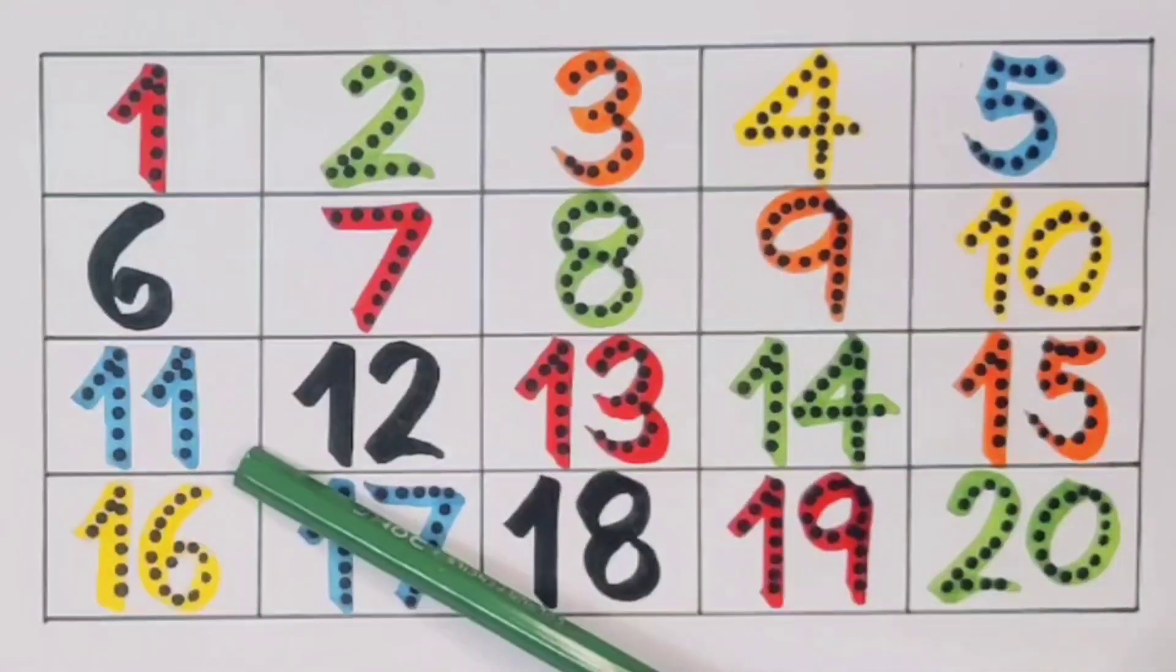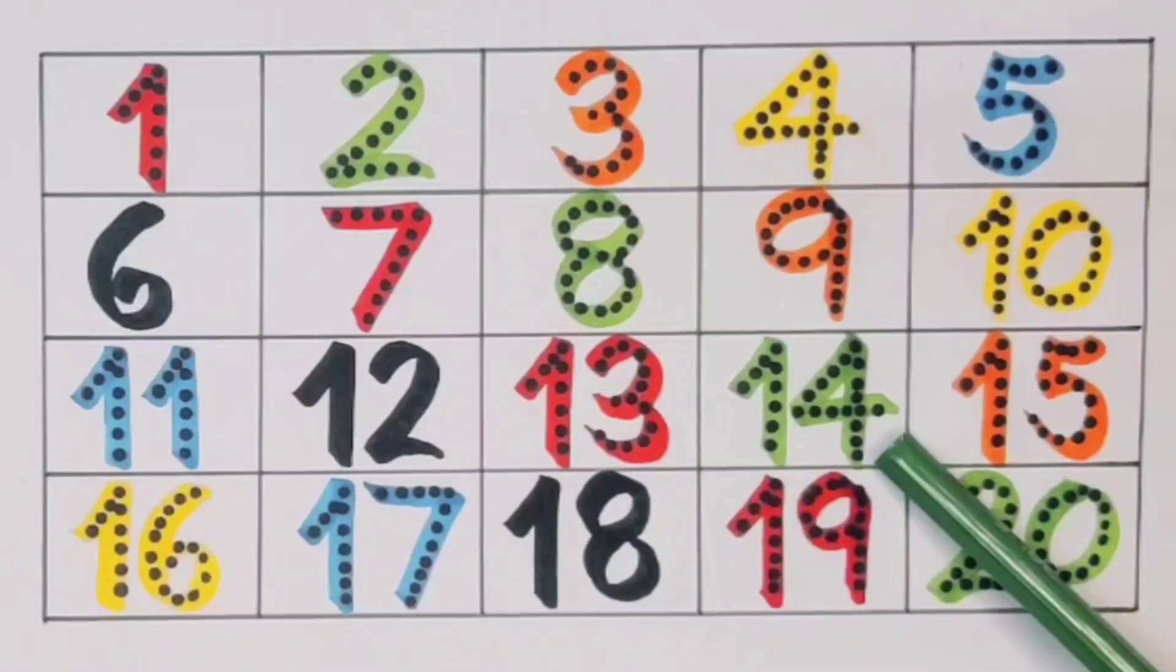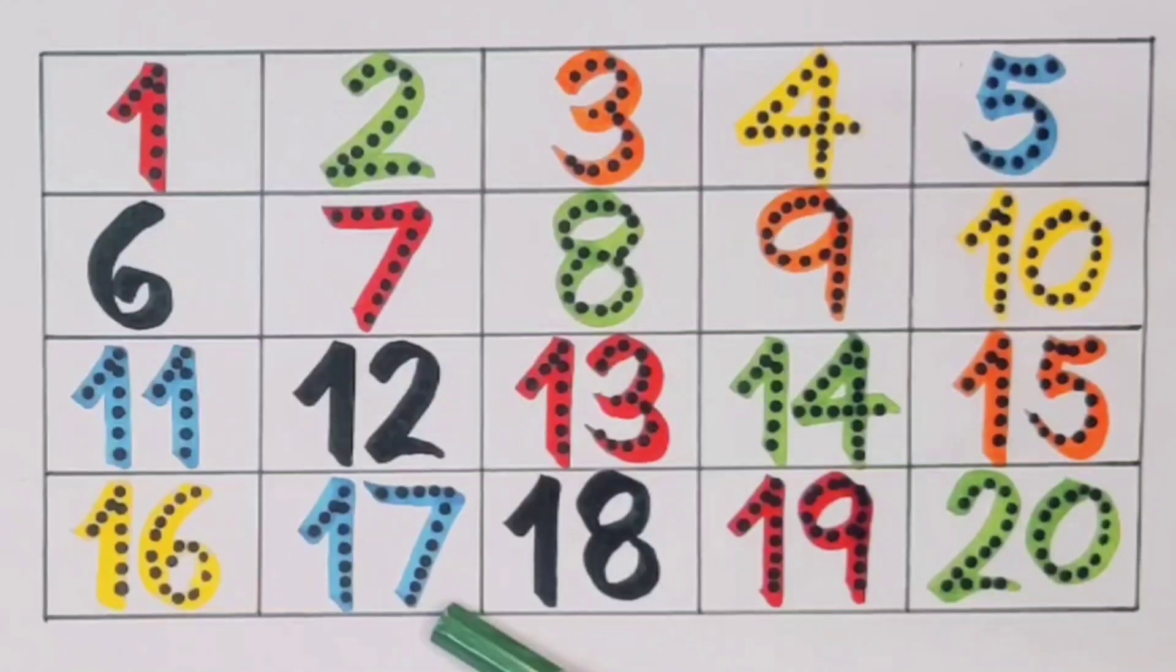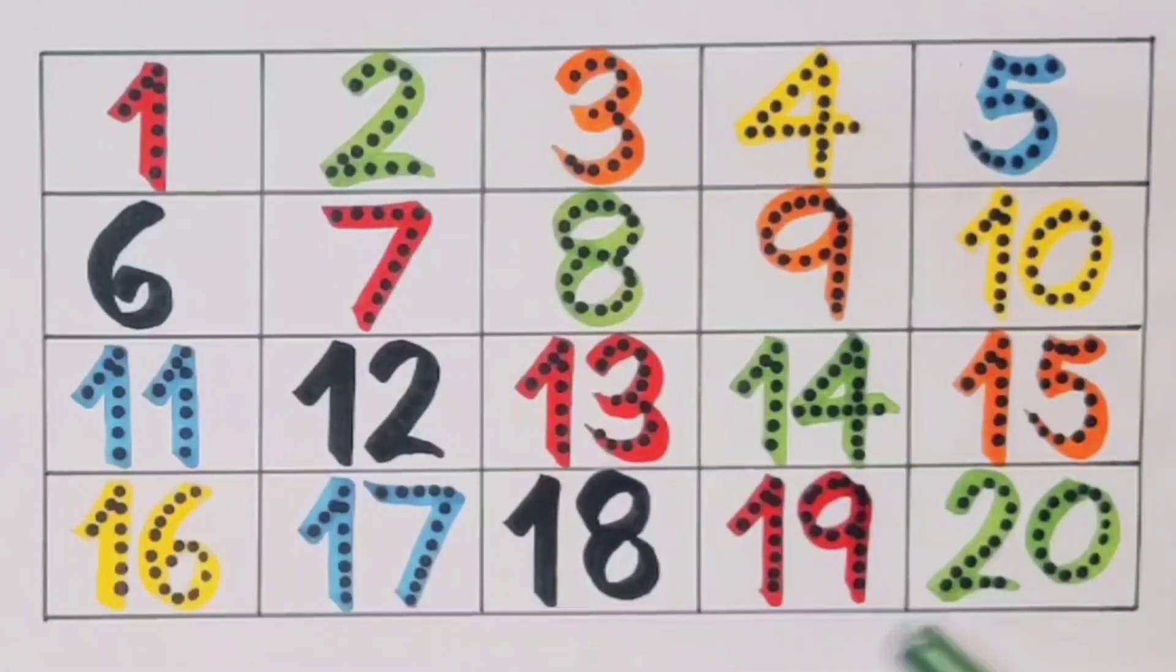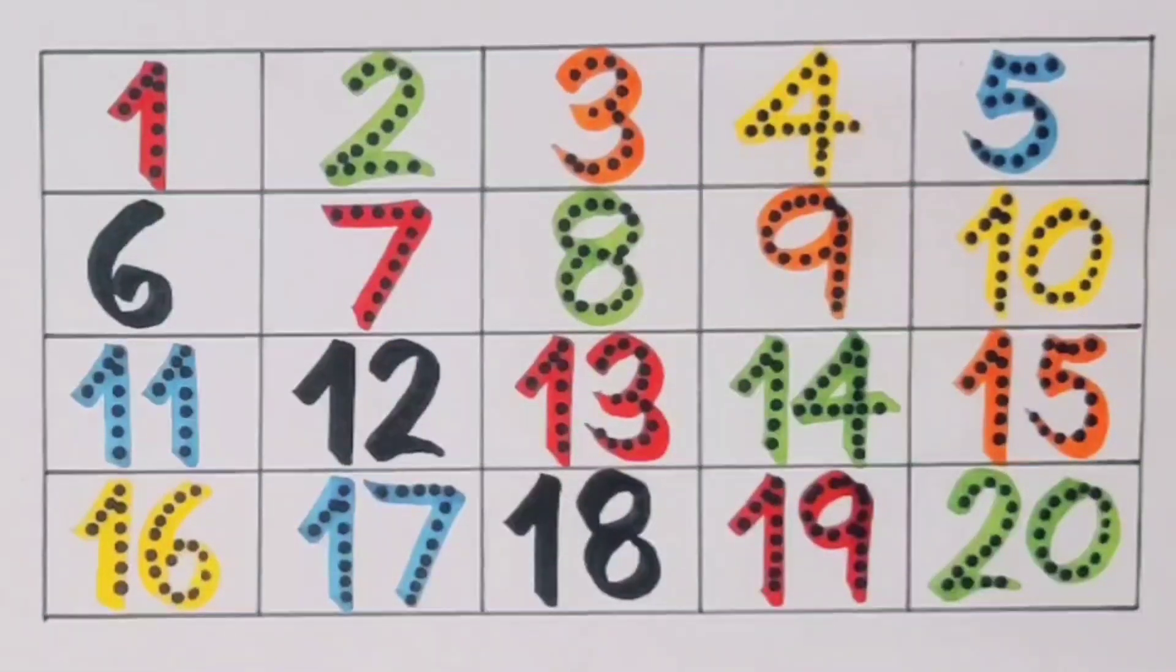What we learned: we learned one, two, three, four, five, six, seven, eight, nine, ten, eleven, twelve, thirteen, fourteen, fifteen, sixteen, seventeen, eighteen, nineteen, twenty.